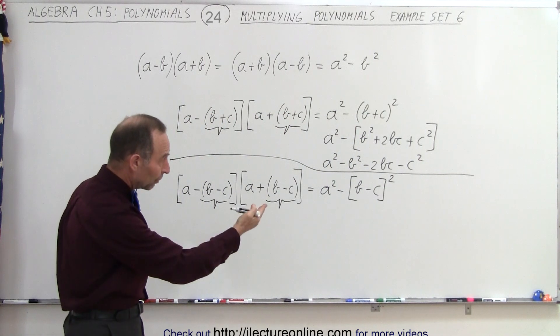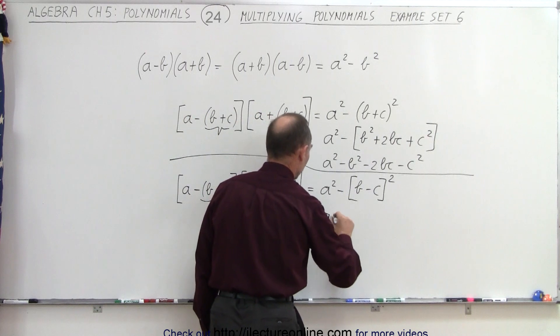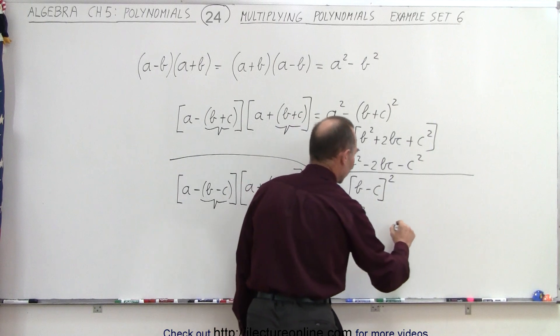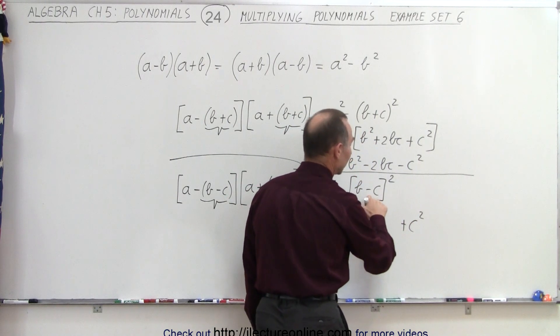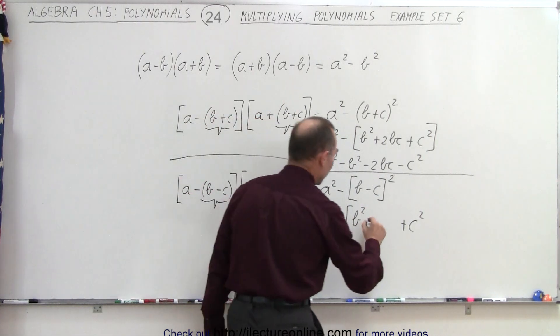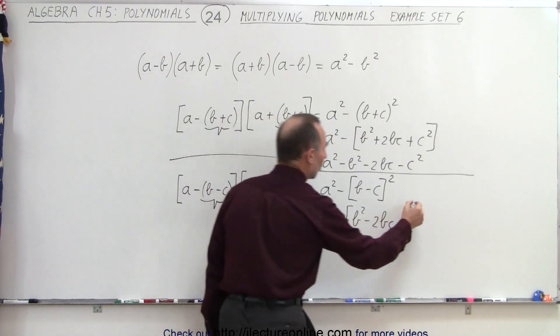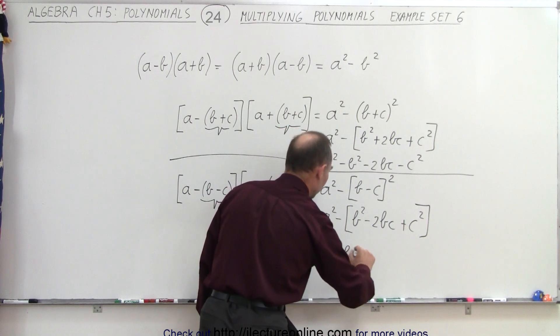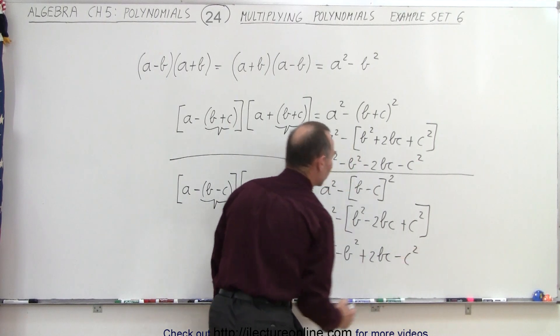So then you would multiply that binomial squared, and this would become equal to a squared minus the first term squared, b squared, the last term squared, that would be c squared, and it would be a plus because negative c times negative c is a plus c squared, and it's twice the product of the two, which would be a minus 2b times c. And then when we apply the negative sign to that, this would be a squared minus b squared plus 2bc and minus c squared.